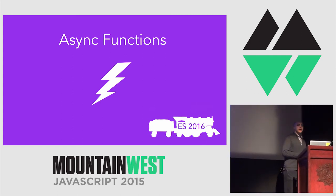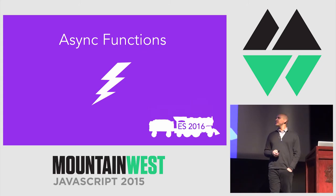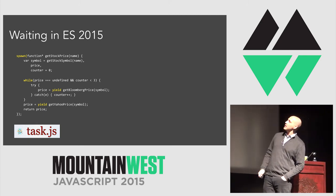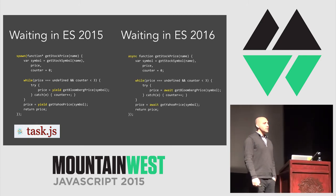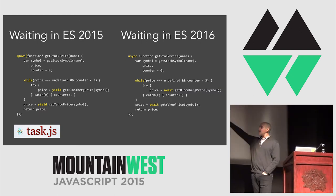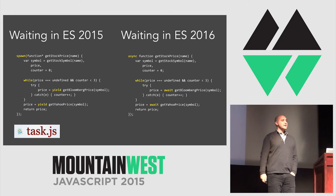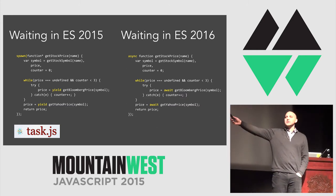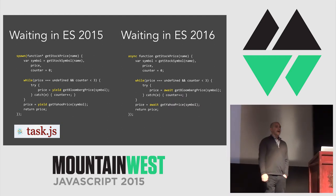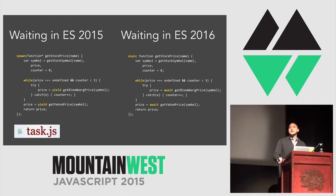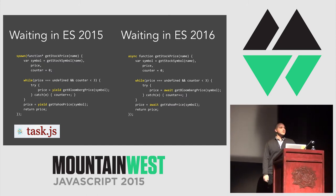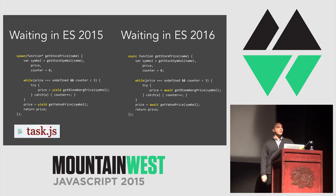That brings us to the first ES2016 feature: asynchronous functions. Using async functions in ES2016, we can take the spawn/generator pattern and turn it into something much cleaner — notice the new async keyword and the new await keyword. Under the hood, this pretty much desugars to the asynchronous iteration pattern. Instead of yield, we have await; instead of function star, we just have a regular function. If you want to do a bunch of operations sequentially without callbacks, you can use loops, try-catch, and all the control flow you're used to for blocking code.